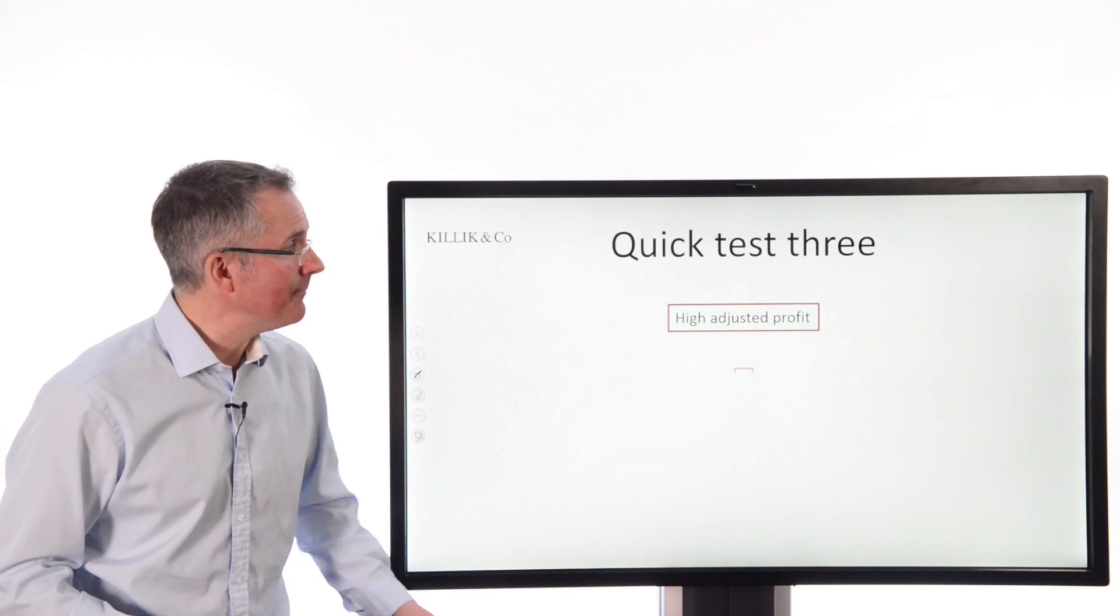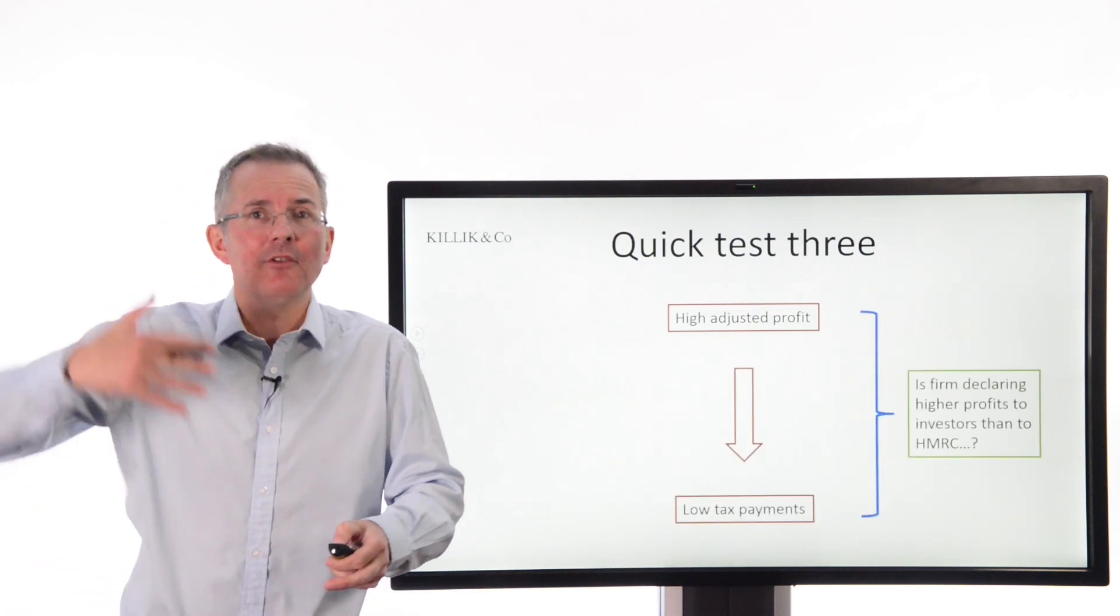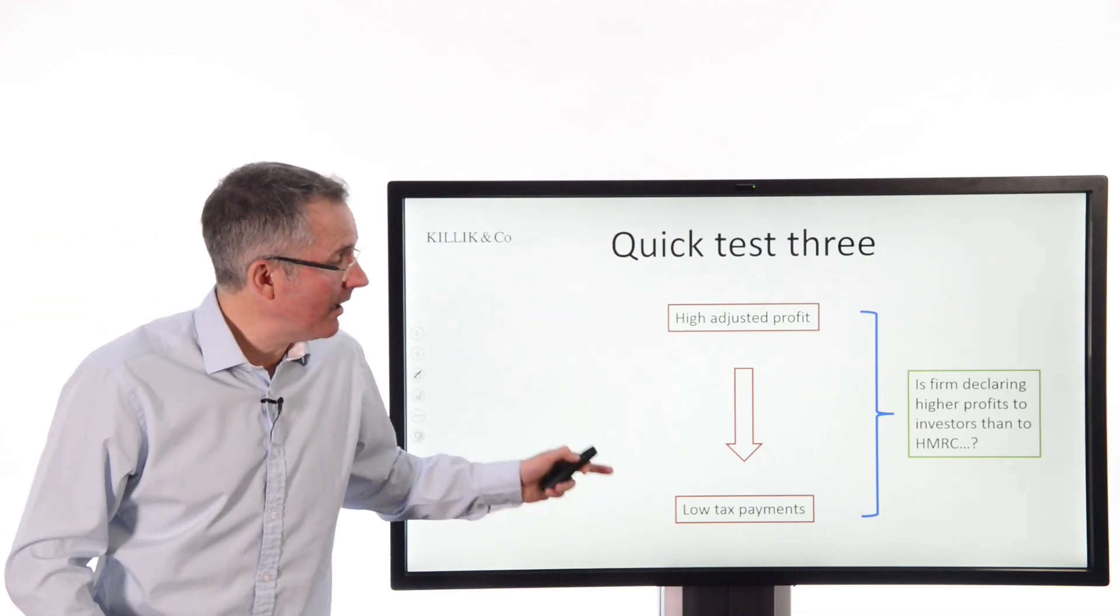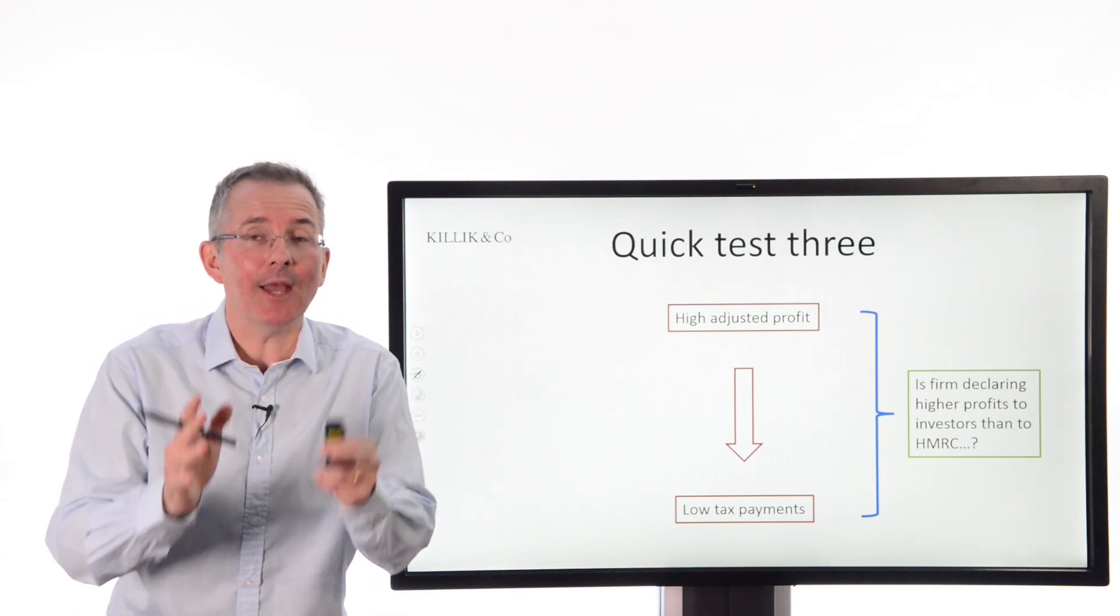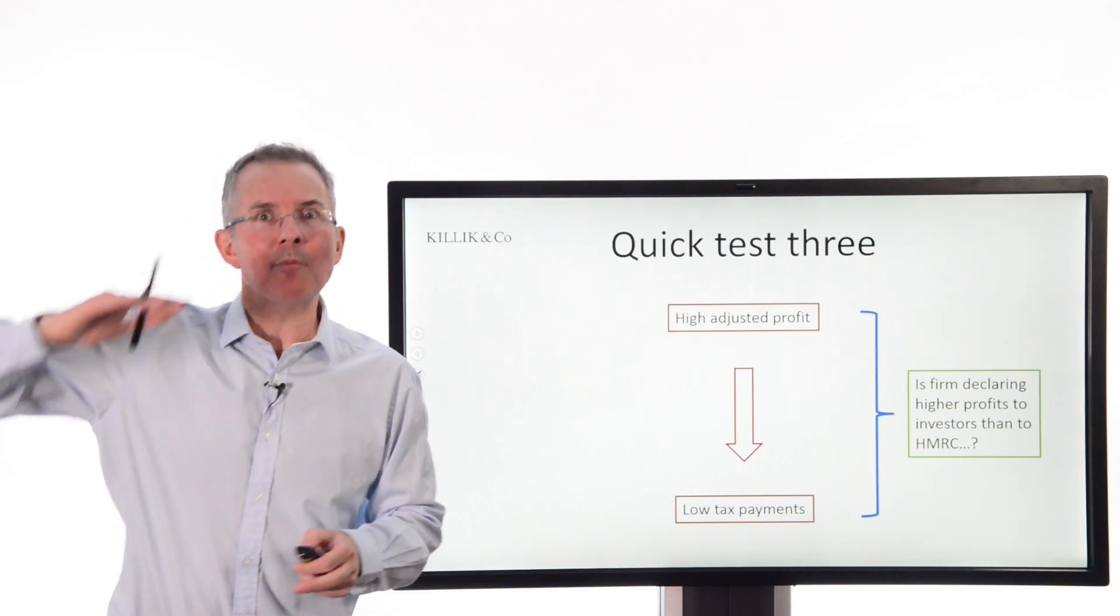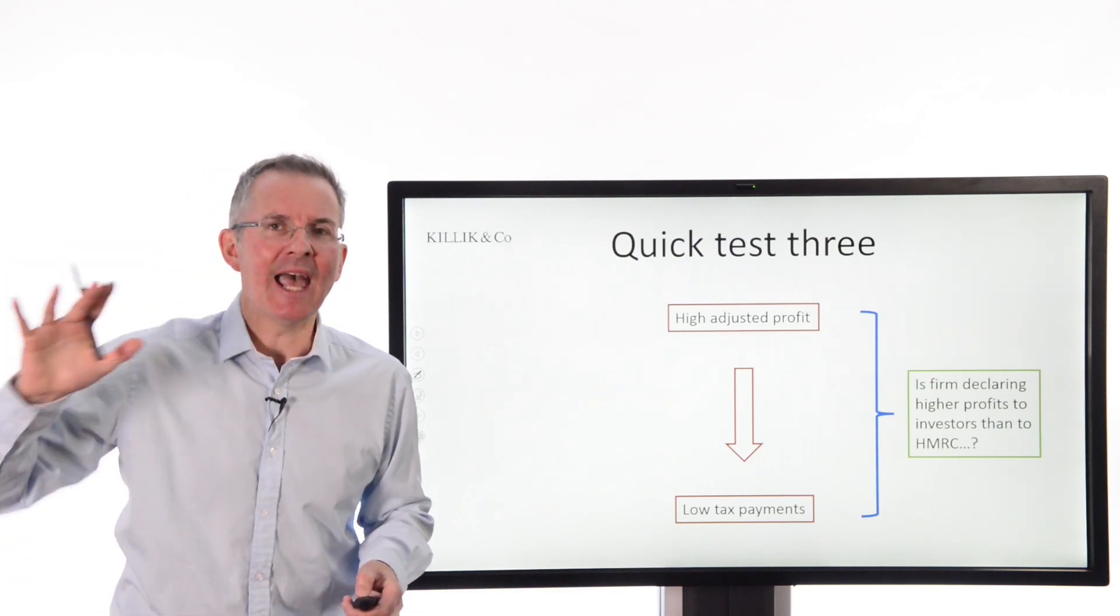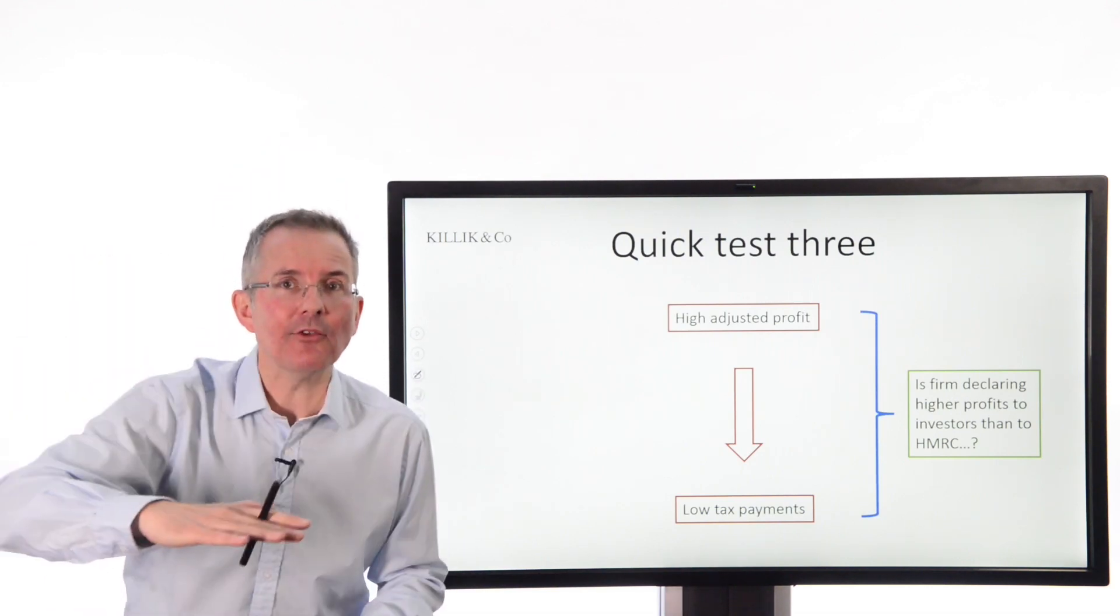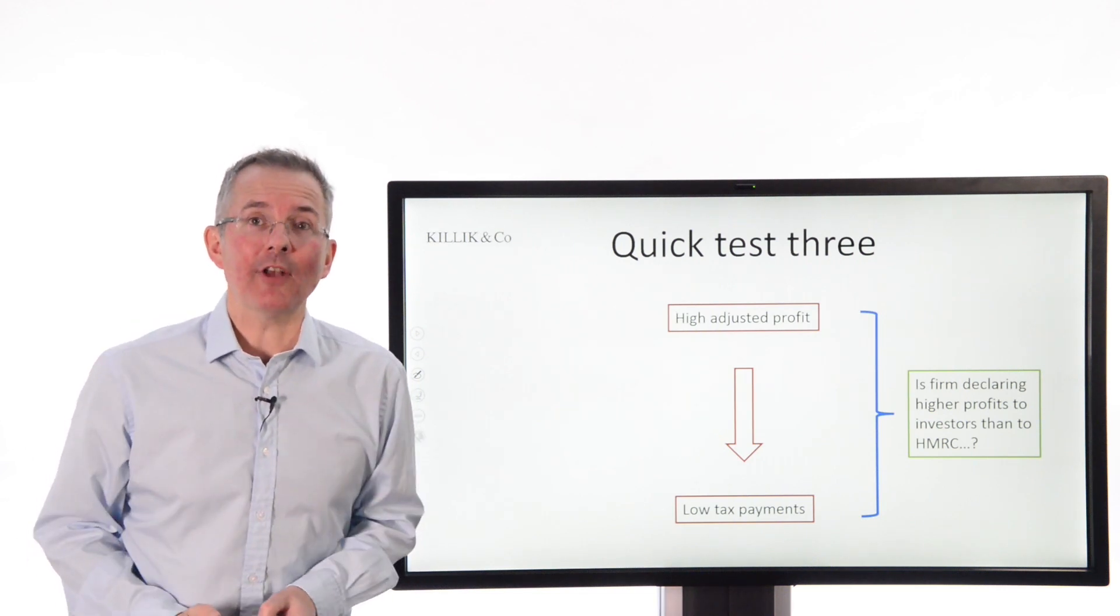And test number three is when you see an adjusted profit number, I've called it that, could be any of those others, headline, underlying, special, whatever they call it, a big number there and low tax payments. Because could it be what's happening here is the directors want to present a high profit number to investors, but the people who do the tax calculation, HMRC, are saying actually, we think the profit for the year is a lot lower and that brings down the tax payment. That again, has got to be a little bit suspect.